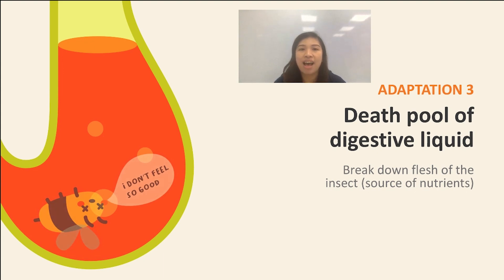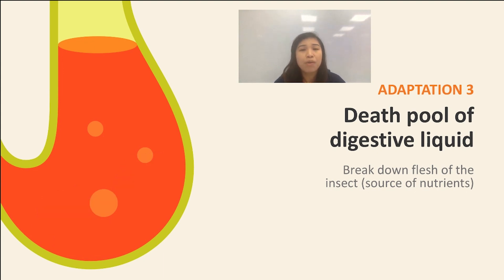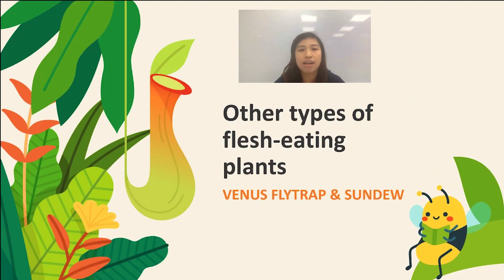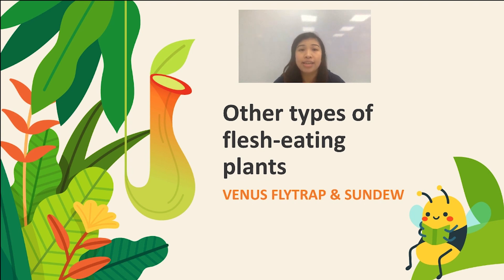Now that we have discussed the different adaptations of the pitcher plant, some of you may ask — are there other plants that eat flesh besides the pitcher plant? The answer is yes, there are plenty. Some examples include the Venus fly trap and the sundew.